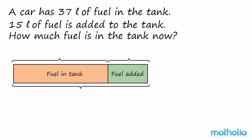Let's use a model to help solve the problem. We know that in the beginning there is 37 litres of fuel in the tank, and 15 litres of fuel is added to the tank. We need to find the total volume of fuel in the tank now. We must add the numbers together.